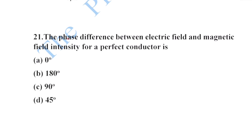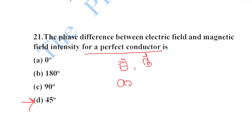Next: the phase difference between electric field and magnetic field intensity for a perfect conductor is 45 degrees. In free space, both electric field and magnetic field are in the same phase. In a perfect conductor, the electric field leads the magnetic field.